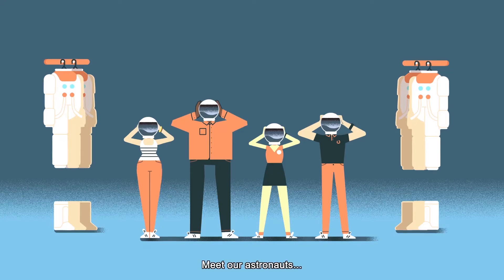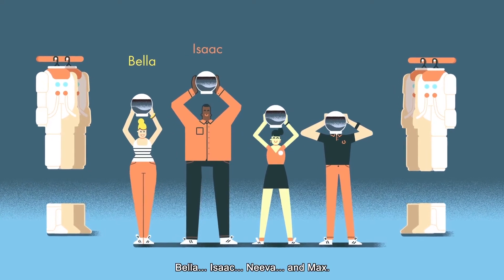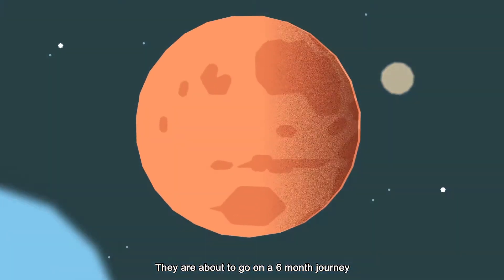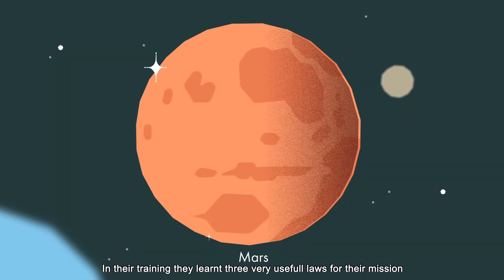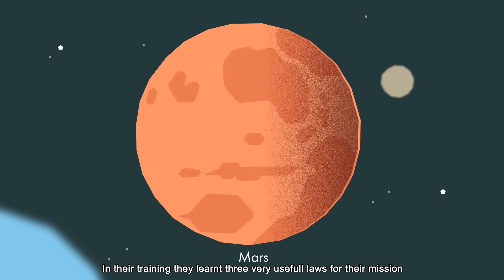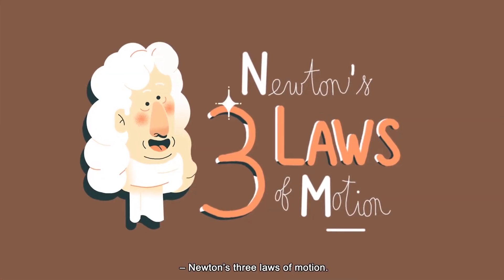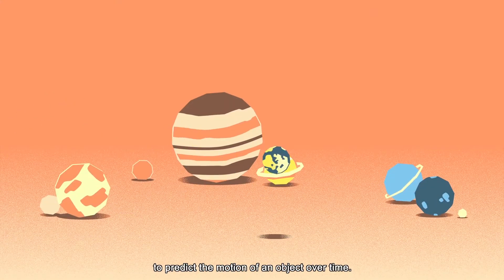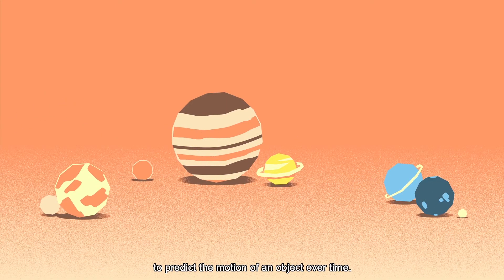Meet our astronauts, Bella, Isaac, Neva and Max. They're about to go on a six-month journey to Mars. In their training, they learnt three very useful laws for their mission: Newton's three laws of motion. They describe how things move and allow us to predict the motion of an object over time.